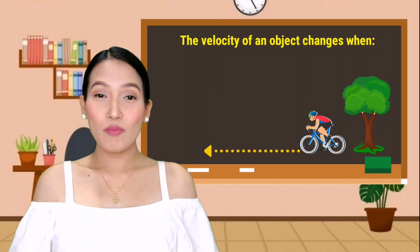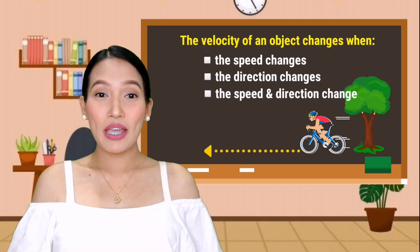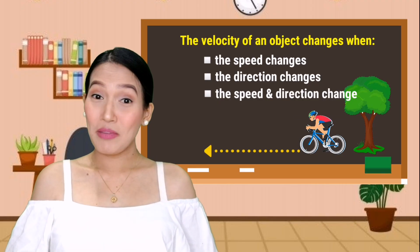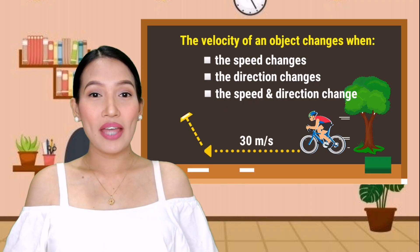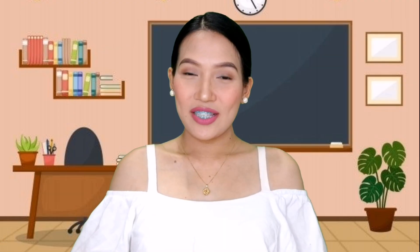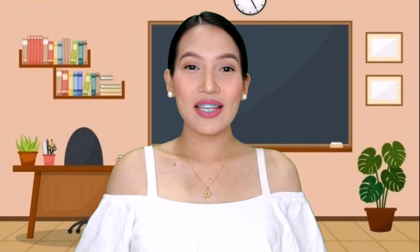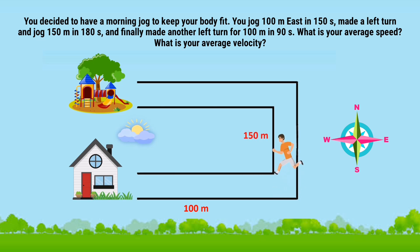The velocity of an object changes when the speed changes, the direction changes, or both the speed and direction change. That means if you're moving along at 30 meters per second and then you came to a bend in the road, your velocity changes because your direction changes. Let's have another example on how to solve speed and velocity. You decided to have a morning jog to keep your body fit. You jog 100 meters east in 150 seconds, made a left turn, and jog 150 meters in 180 seconds, and finally made another left turn for 100 meters in 90 seconds.